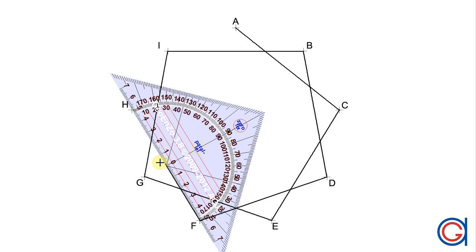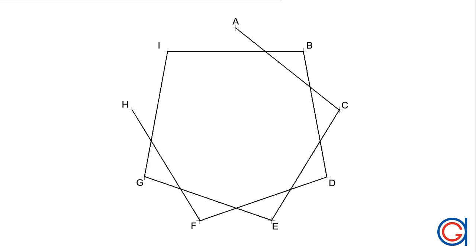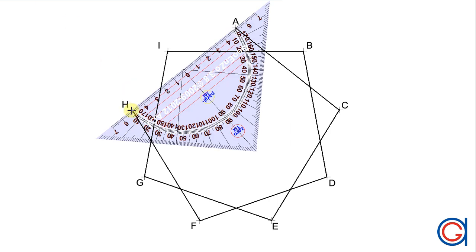Now vertex F to vertex H, and now vertex H to vertex A. So now we have completed our order 2 star nonagon.